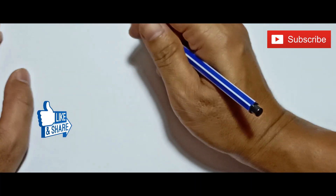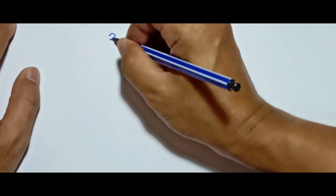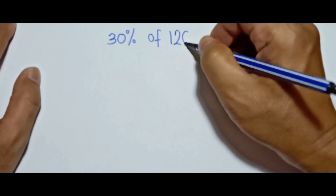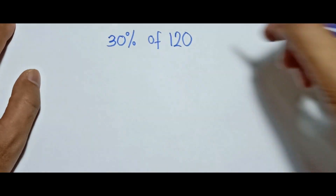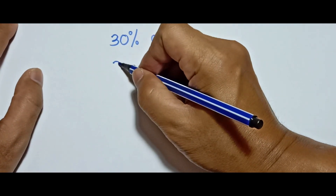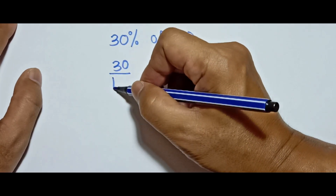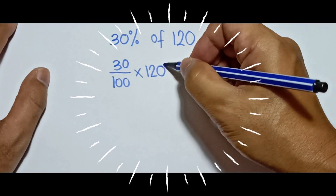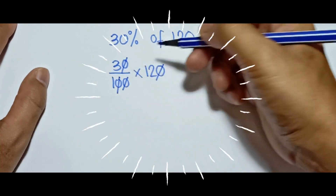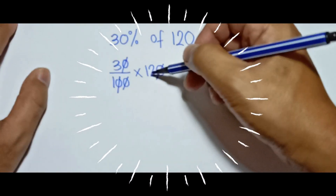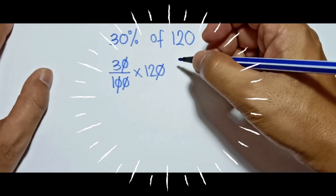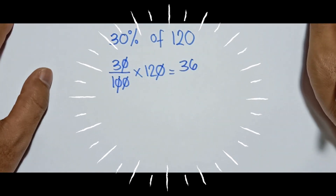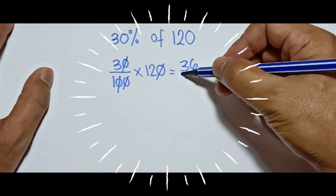For example, if you have 30 percent of 120, all you have to do is write 30 percent as a fraction: 30 over 100, multiplied by 120. You can cancel one zero here and one zero there, so all you have to do is 3 times 12, which is 36. So 30 percent of 120 is 36.